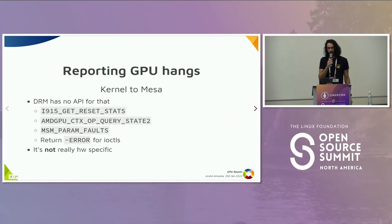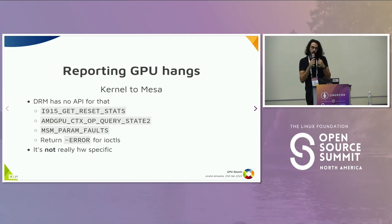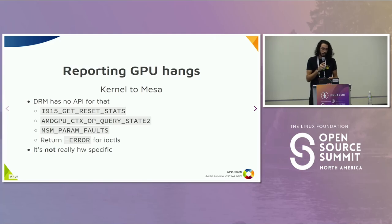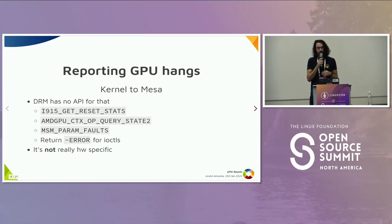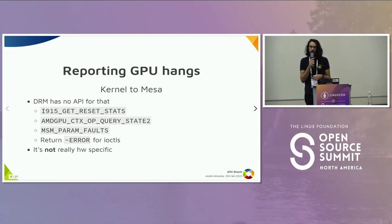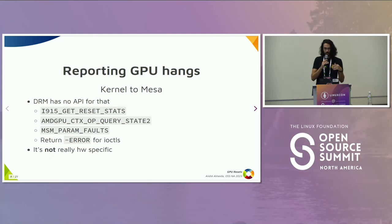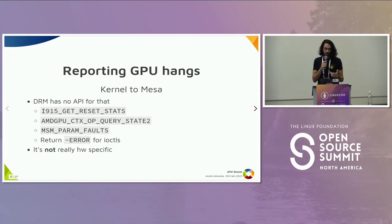Now that the kernel knows a reset is happening, we need to tell the user space mode driver that something wrong happened — but DRM has no API for that. If you look on the kernel side, each vendor implements something different: Intel, AMD, and Freedreno all have different ioctls for doing that. This isn't hardware-specific, because if you read the code for all those operations, they do very similar things but in different ways and they are not very complete. For instance, AMD GPU has a version two, but we might need version three. In the end, I would like to have a standard for that.